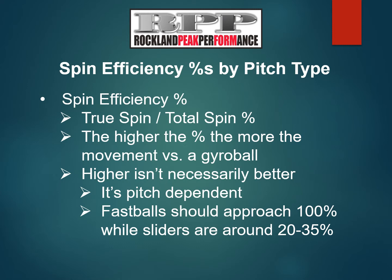A typical slider probably won't have a 50% spin efficiency — it wouldn't be considered a pure slider. The best way to explain this is that whether the percentage is good or bad depends on the pitch. For example, fastballs should approach 100% while sliders should be around 20–35%.